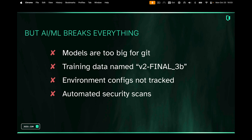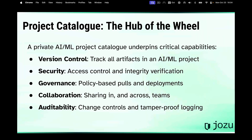Models are too big for Git. Even Git LFS is awkward and difficult. Often environment configs are not really tracked — they tend to be kind of embedded sometimes. You've got security scans that are not automated and not consistent; they may not in fact be done at all. A lot of times people feel like, well, the base model was security scanned so I'm going to fine-tune it and don't need to do anything. It's not always that simple. So I want to start with the project catalog, which is the hub of the wheel — the most important thing that holds it all together.